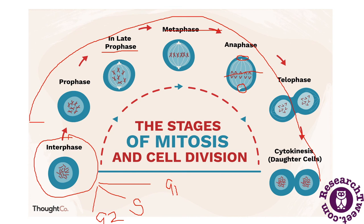Finally, cytokinesis accomplishes the division of the cytoplasm to form two daughter cells. Cytokinesis does not always follow karyogenesis — repeated cell division without cytokinesis leads to multinucleated cells. Cytokinesis begins in anaphase and ends in telophase. In animals it is achieved by cleavage, while in plants it occurs by cell plate formation.